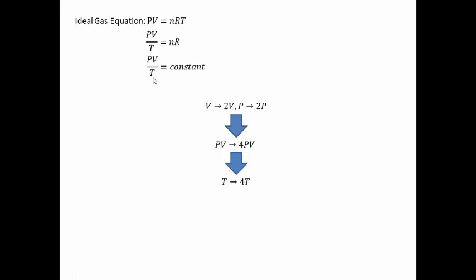For an ideal gas, the translational kinetic energy is related to temperature through the equation EK = (3/2)kBT, where kB is the Boltzmann constant.